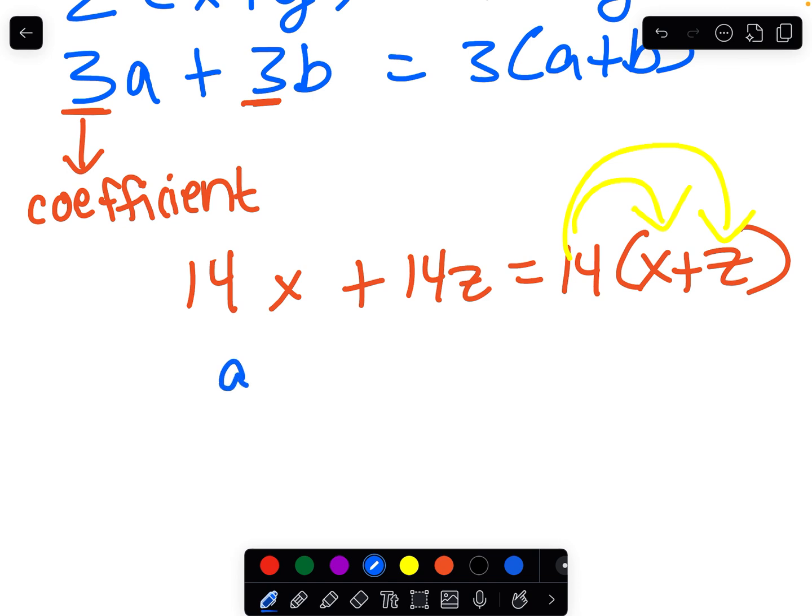Oh, and since we're on the subject of coefficients, it's important for you to know that a letter alone like a actually has a coefficient of one, because one a equals a, one b equals b. This is because of the identity property of multiplication.